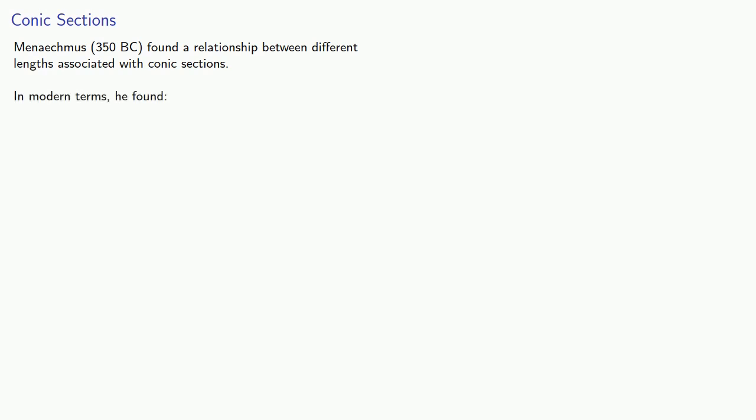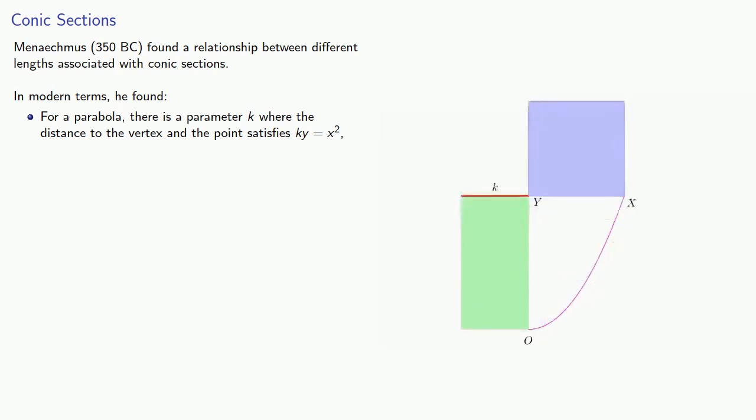In modern terms, we might describe Menaechmus' results as follows. For a parabola, there is some parameter k where the distance to the vertex and the point satisfies ky equals x squared. And we might view that as the equality of the area of a rectangle with width k and height y and the square with side length x. So no matter how you move along the parabola, those two areas will always be equal.